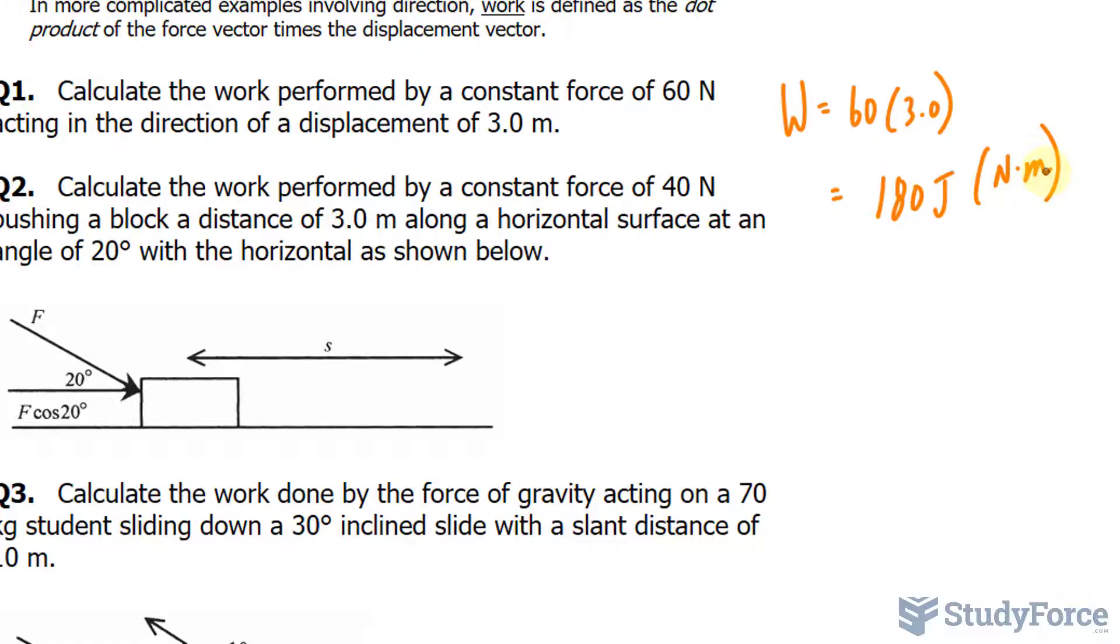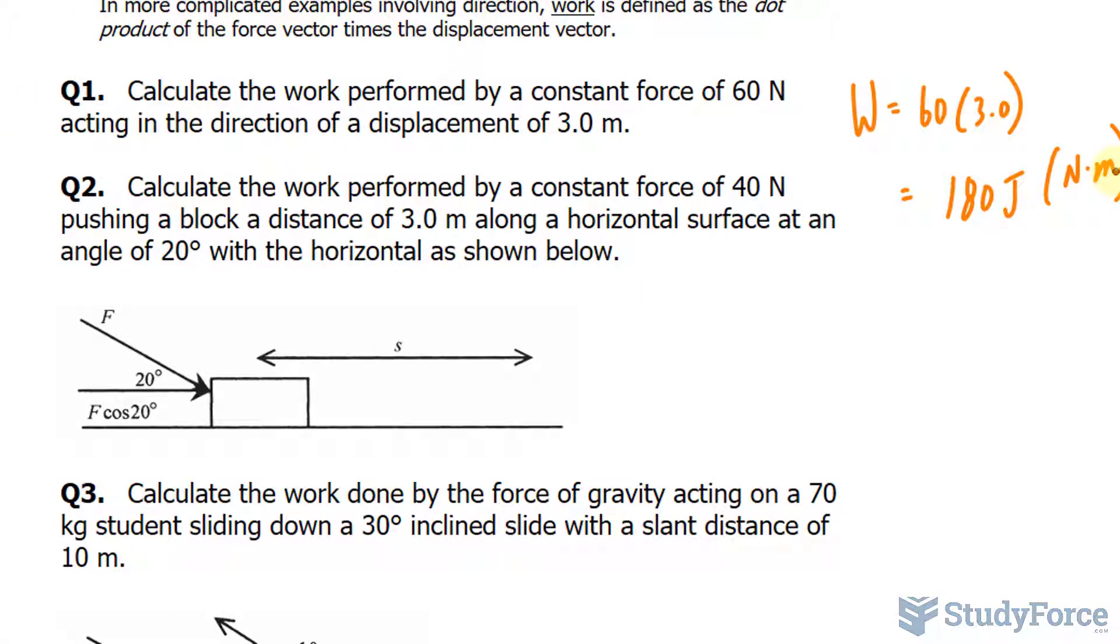Let's do something more complicated. In question number two, calculate the work performed by a constant force of 40 newtons pushing a block a distance of 3.0 meters along the horizontal surface at an angle of 20 degrees with the horizontal as shown. We have a force of 40 newtons represented by this vector right here. What we need to do is find the magnitude of that vector and multiply it by the displacement of 3.0.